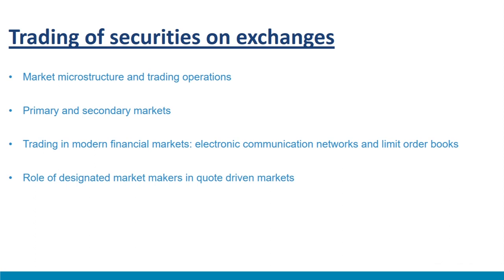Investor orders are often submitted to exchanges through brokers. Modern-day electronic trading happens through two broad categories of orders: market orders and limit orders. A market order is an order to trade immediately at the best available prices. A limit order states a price limit for execution — if that price limit is met, only then is the order executed. Until then, the limit order is stored in the exchange's limit order book.